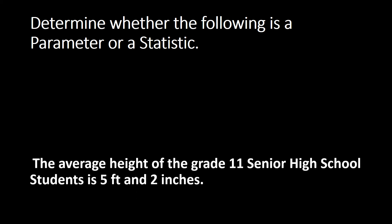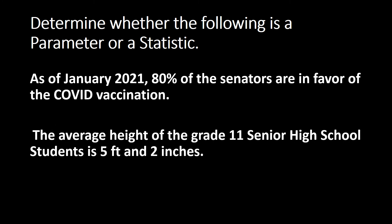Next example: The average height of the Grade 11 Senior High School students is 5 feet and 2 inches. The descriptive measure is the average height of 5 feet and 2 inches. It is describing the Grade 11 Senior High School students — one entire group — which is taken as a population. Therefore, this descriptive measure is a parameter.